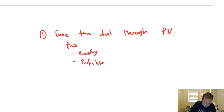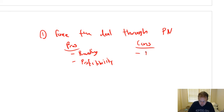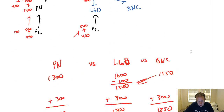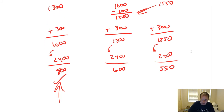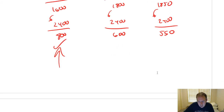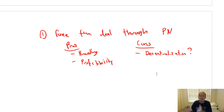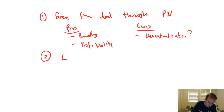The difference in profitability for the company is significant: $800 versus $550 is $250 per computer, times 2,000 computers — that's half a million dollars. So there are real savings, but you might ask: is it worth overriding the decentralized structure? Pros of forcing the deal: branding and profitability. Cons: undermining decentralization. I would say the pros of overriding outweigh the cons.